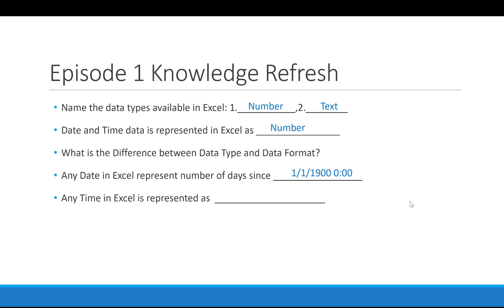The final question is: how is any time in Excel represented? The way we store time in Excel, as we saw in the first episode, is by defining it as a fraction of the day. Any time you pick in the day is going to be a fraction of the whole day — so 0.5 is noon, 0.25 is 6 a.m., and 0.75 is 6 p.m., and so on.